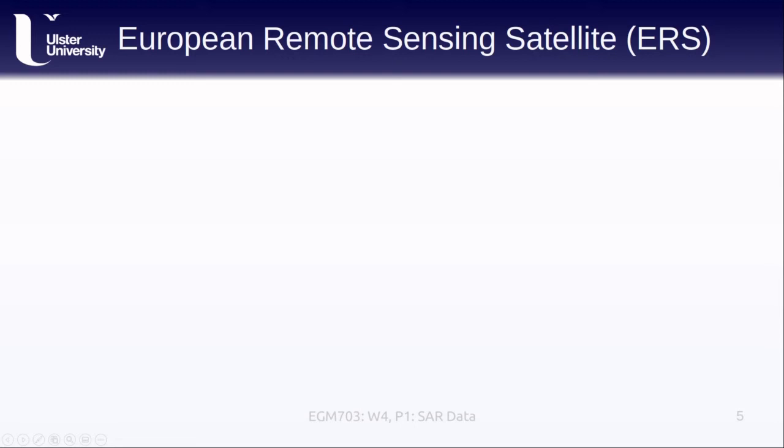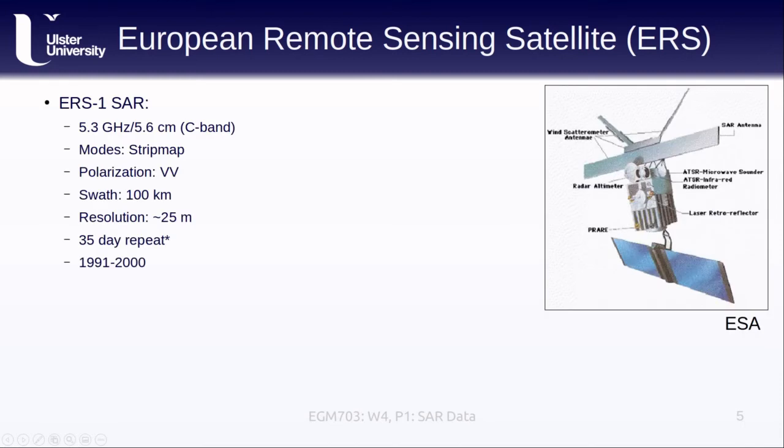So the first SAR mission that we'll cover is the European Remote Sensing Satellite, or ERS. And as you can see from the diagram here, ERS had a number of different sensors, including a microwave sounder, a radar altimeter, and a scatterometer. For now, we're going to focus on the SAR sensor. The ERS SAR instrument operated at 5.3 gigahertz, or 5.6 centimeters wavelength, meaning that this was a C-band radar. ERS only operated in strip map mode with vertical polarization. The VV here means that the transmitter sends out a vertically polarized signal and records a vertically polarized signal. It had a swath width of about 100 kilometers, and a ground resolution of about 25 meters. Normally, it had a 35-day repeat cycle, meaning that the satellite acquired an image from the same location in its orbit every 35 days. ERS-1 was operative from 1991 until 2000.